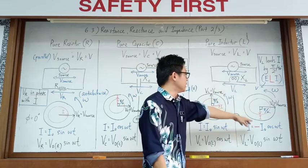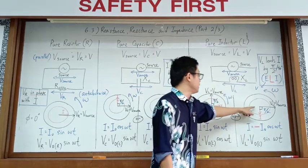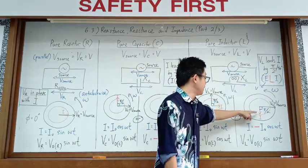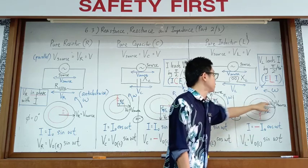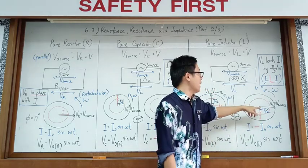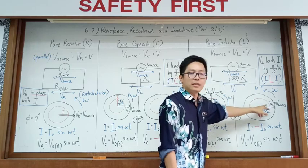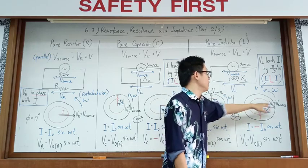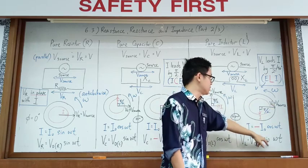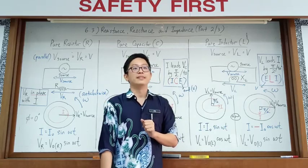Another situation: if the current is at negative cosine, then the voltage is in front by 90 degrees, placing it at the x-component — which is sine ωt.